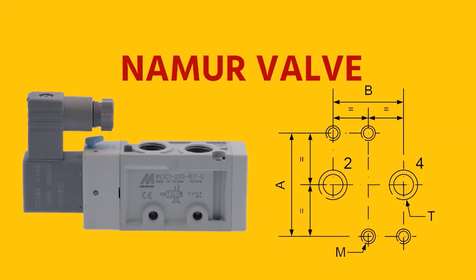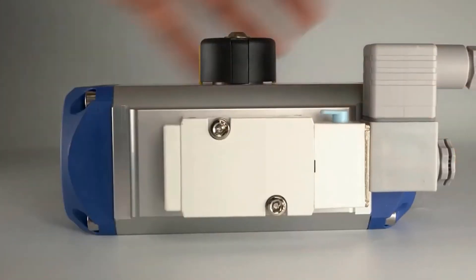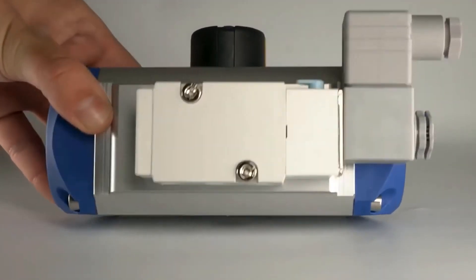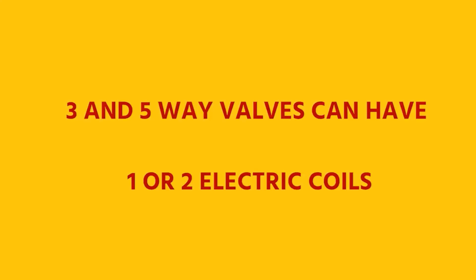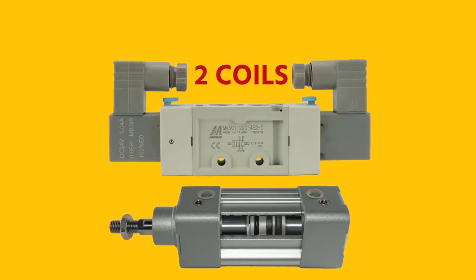Namur valves are a special type that have a standardized design to directly mount them to a valve actuator. They are easy to mount, compact and reduce the number of hoses and fittings. Three and five-way valves can have one or two electric coils. One coil means that the valve returns to a rest position with a power loss. Two coils means that it switches by providing a short pulse to one of the coils. With power loss, these valves remain in the latest position.